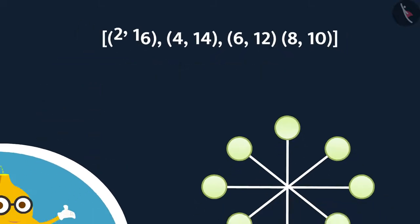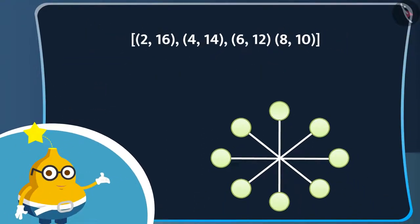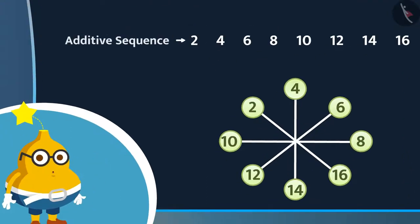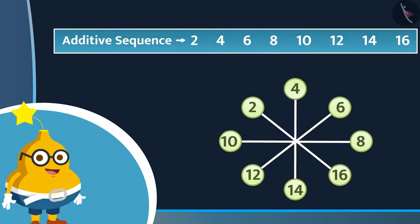So, by using these numbers, we can fill the star like this. Hence, we can also use the 8 numbers in the additive sequence to fill a fourth order star puzzle.